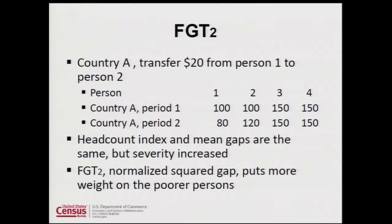Looking just at country A: if we transfer $20 from person one to person two, we have the same poverty rate and the same average poverty gap, but because it's now a squared poverty gap, we're putting more weight on the lower-income person. So the normalized gap tells us that country A in period two is now worse off, because we are concerned about people at the very bottom of the income distribution.